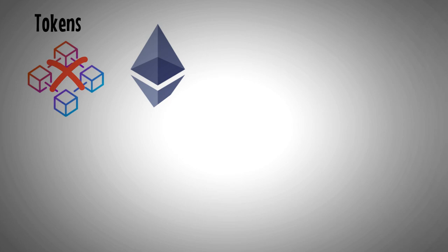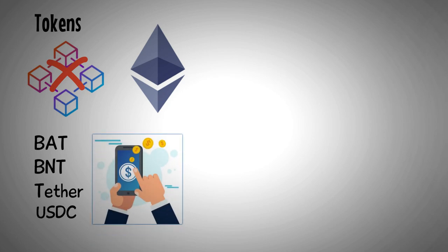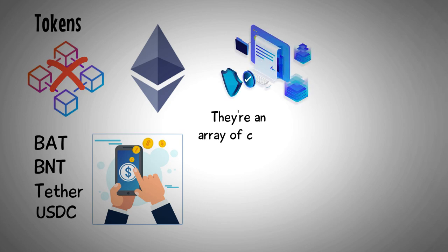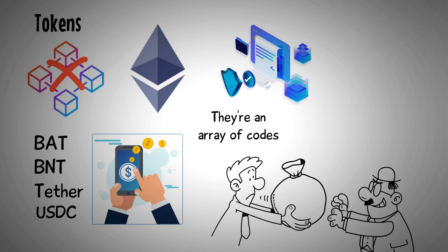Unlike coins, tokens do not have their blockchain. Instead, they operate on other crypto coins' blockchains, such as Ethereum. Some of the most commonly seen tokens on Ethereum include BAT, BNT, Tether, and various stablecoins like the USDC. If crypto coin transactions are handled by blockchain, then tokens rely on smart contracts. They are an array of codes that facilitate trades or payments between users. Each blockchain uses its smart contract. For example, Ethereum uses ERC20 and NEO uses NEP5.